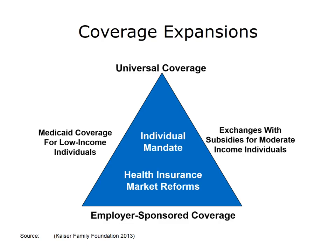The ACA creates new exchanges, or marketplaces, where people can purchase coverage and, depending on their income, receive premium subsidies to help them pay for the coverage. It includes new penalties for employers that don't offer coverage to their employees and provides tax credits to small employers that do, in order to bolster the availability of employer-sponsored coverage.